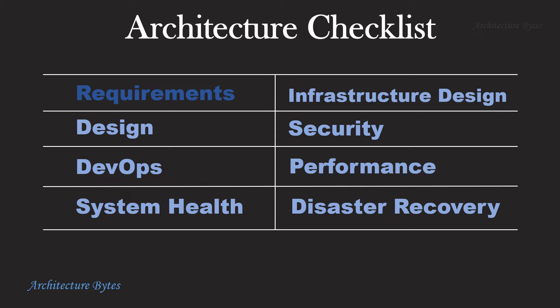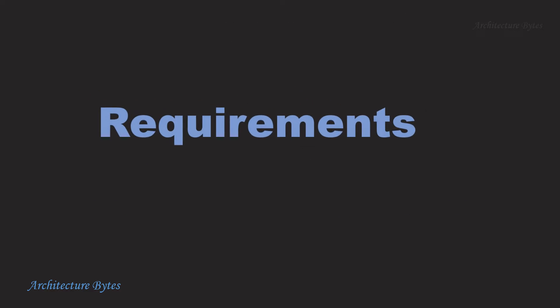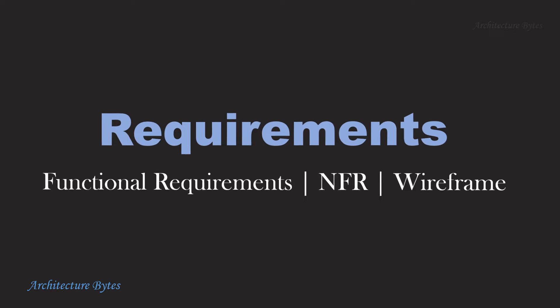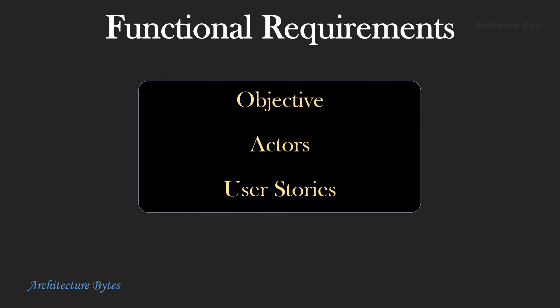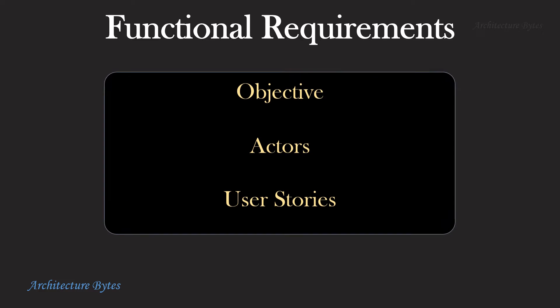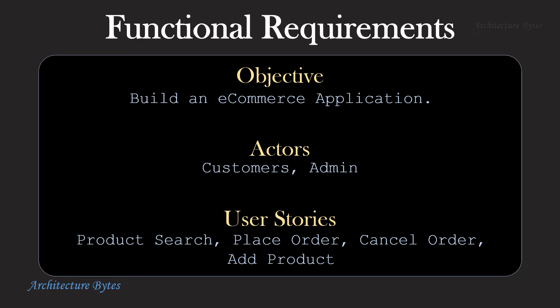Let's start with Requirements. Functional Requirements at the very minimum are made up of Objective, Actors, and User Stories. Here the objective is to build an e-commerce application. Actors are Customers and Administrators. User Stories could be Product Search, Place Order, Cancel Order, Add Product, and so on.